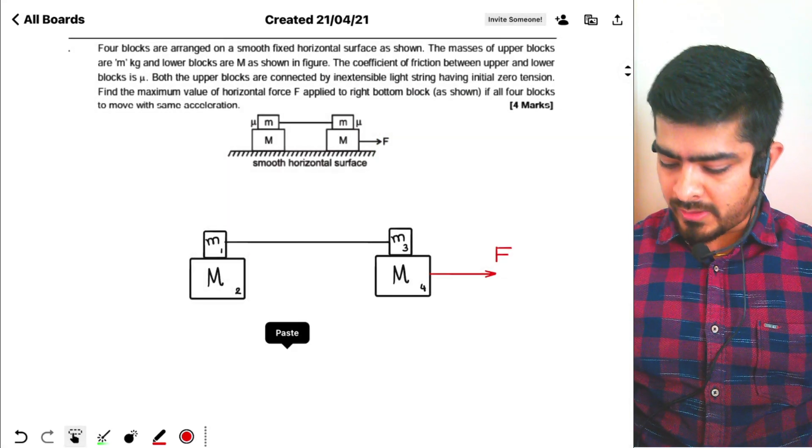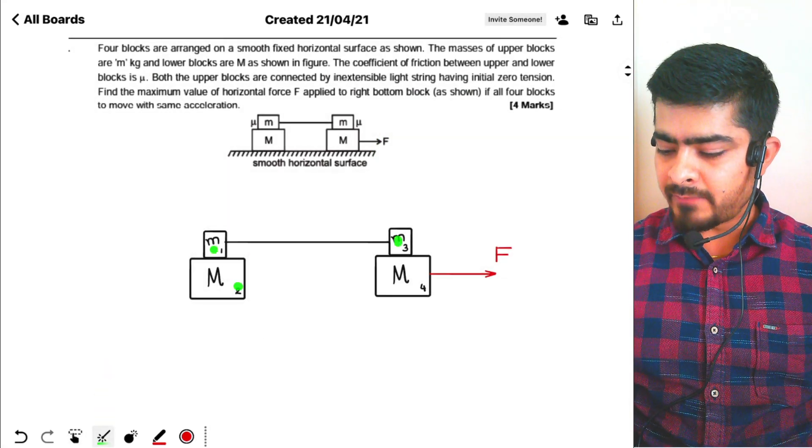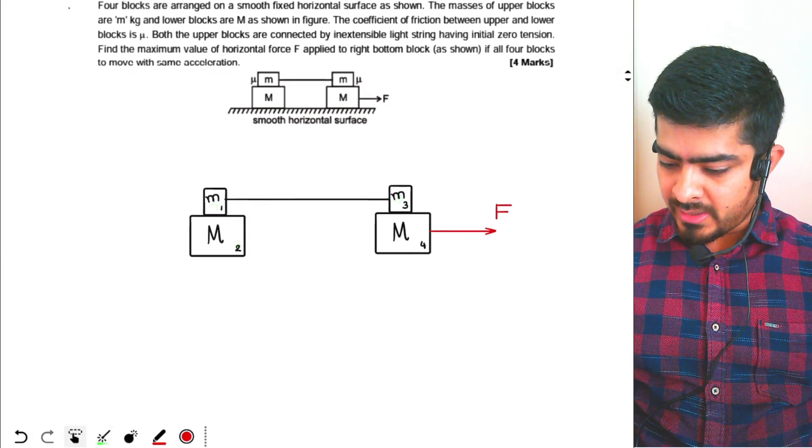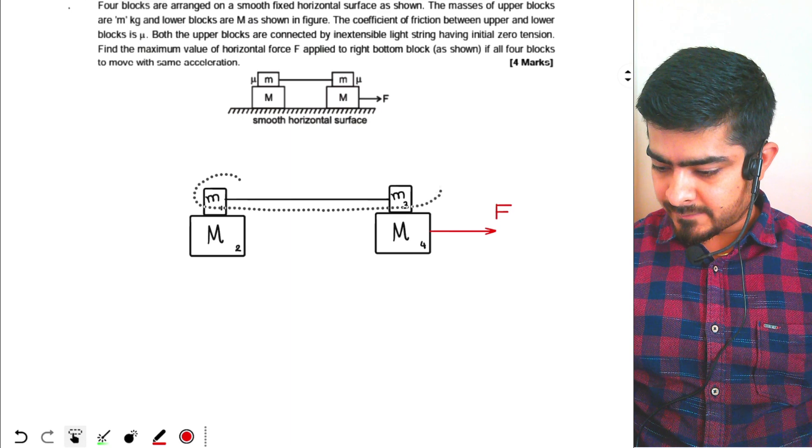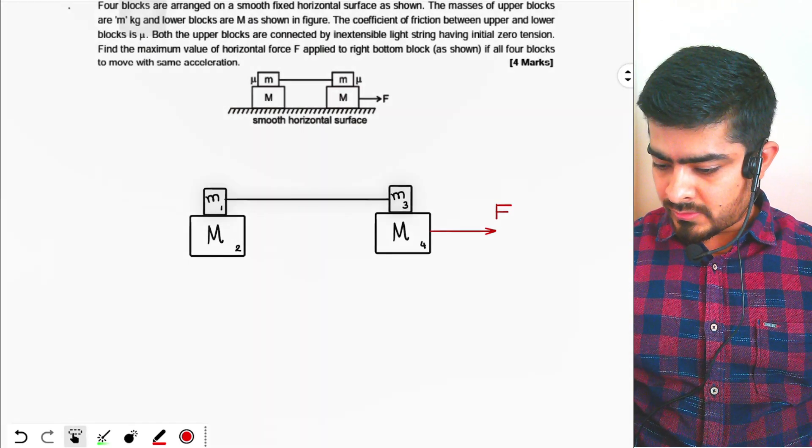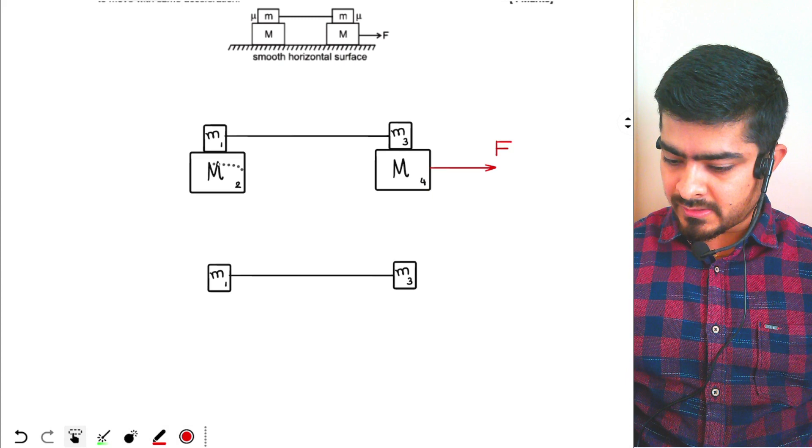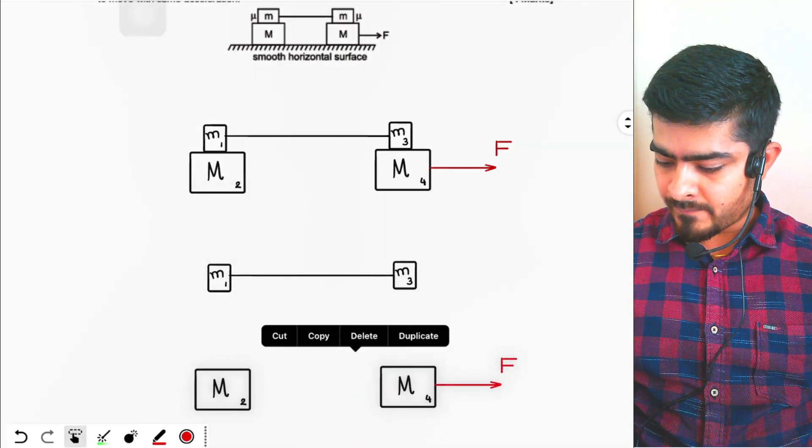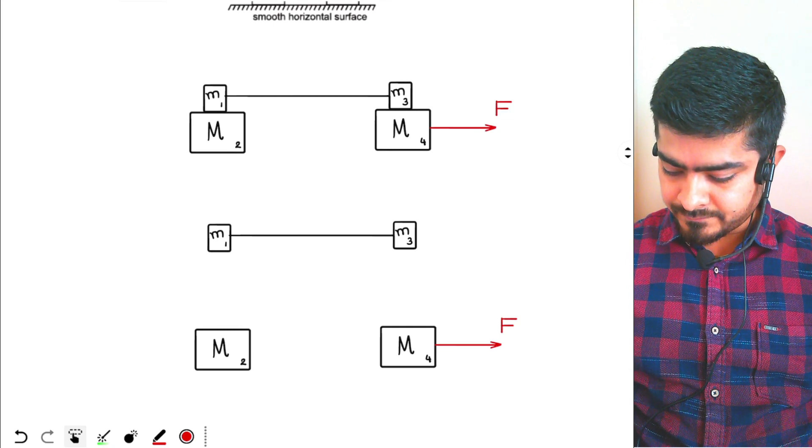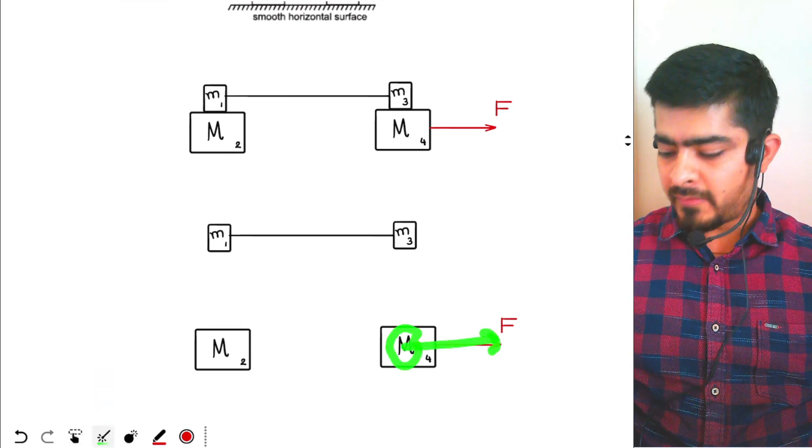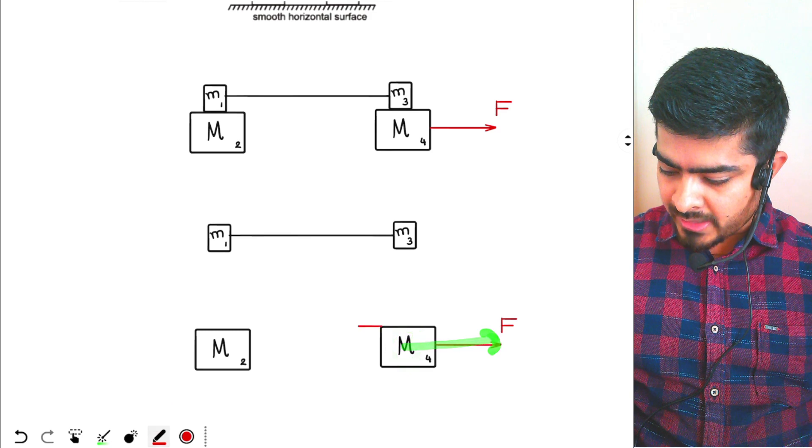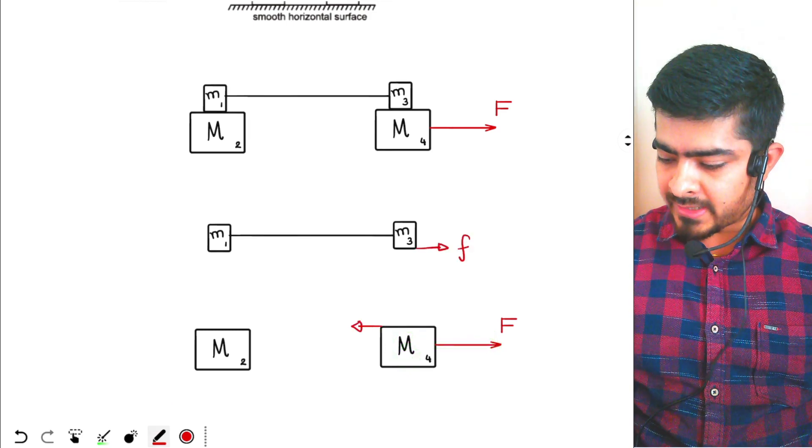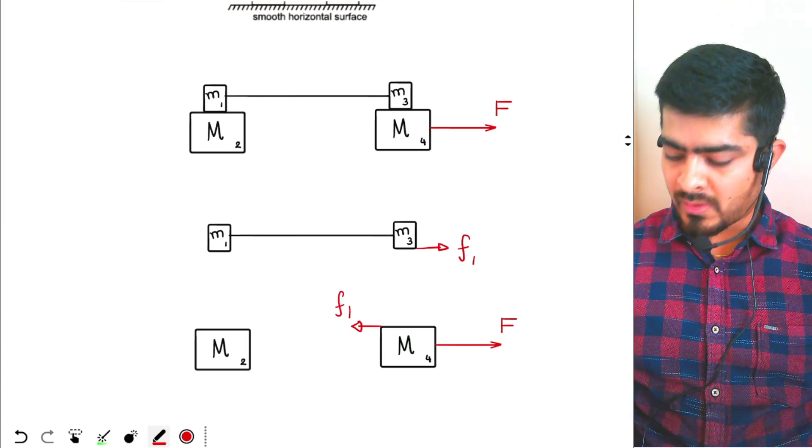I have taken the four blocks again and this time I have numbered them 1, 2, 3, 4, right? So I can draw the FBD of the system like this. The upper two blocks will be like this and the lower two blocks over here. Now we've got friction. We are pulling this block forward so friction will act on this block in backward direction and over here in forward direction. Let's call this friction as F1.